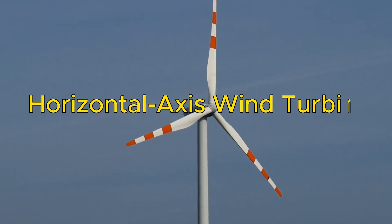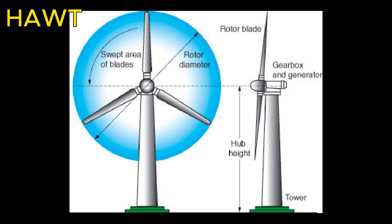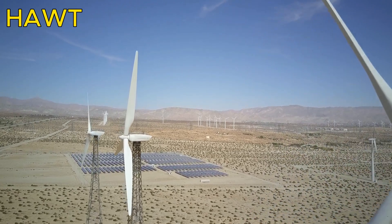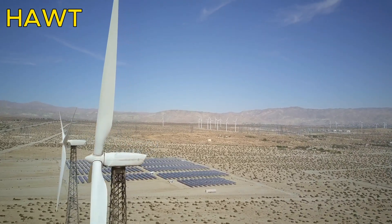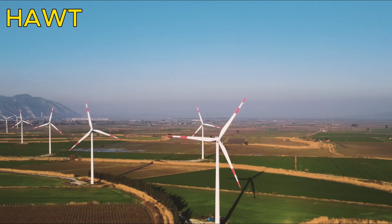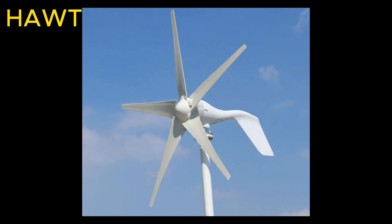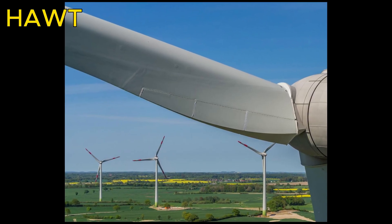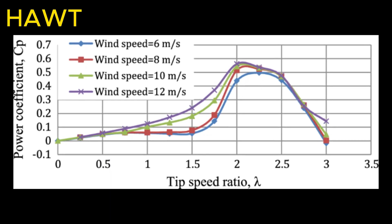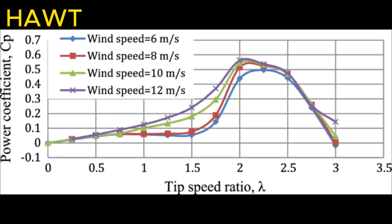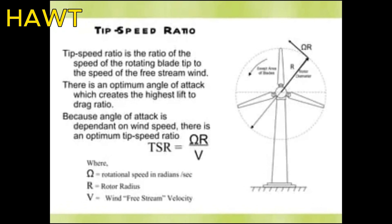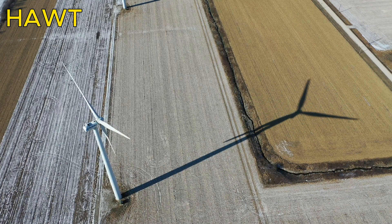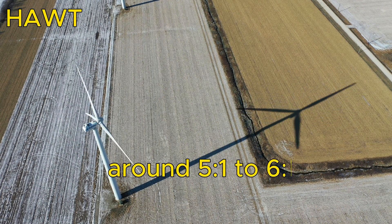Horizontal axis wind turbine blades are the most common type of wind turbine blades. They have a horizontal axis of rotation that is parallel to the wind direction. HAWT blades usually have three blades, but can have two or more depending on the design. HAWT blades have a twist along their length to achieve an optimal angle of attack at different wind speeds. The tip speed ratio, TSR, of HAWT blades is the ratio of the tip speed to the wind speed, and it is a vital design criterion for lift-type wind turbines. The optimal TSR for HAWT blades is around 5.1–6.1.